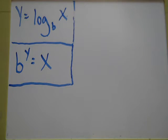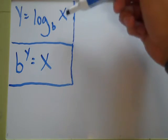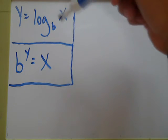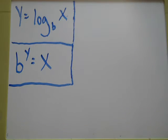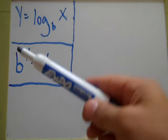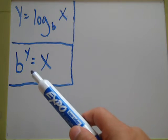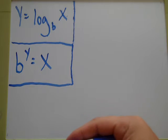In recap, this right here is your logarithm function formula: y equals log base b of x. Now down here, this is the exponential function, the exponential form of that - the same thing, just expressed different ways.